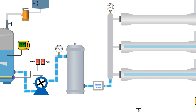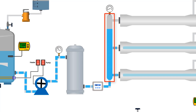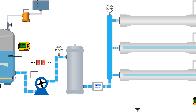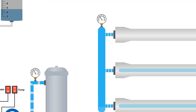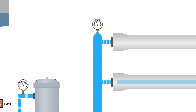The fluid then goes to the inlet header, which distributes the fluid to the membranes. The pressure gauge shows the pressure before the membranes.